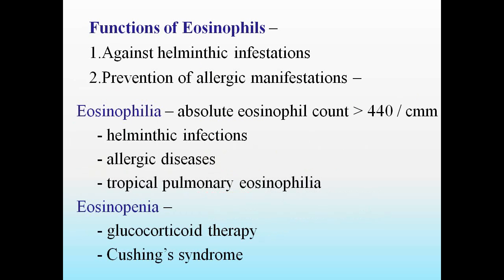The functions of eosinophils are: defense against helminthic infestations and prevention of allergic manifestations — these are the 2 basic functions. Eosinophilia means the absolute eosinophil count goes beyond 450 per cubic millimeter, seen in helminthic infestations, allergic diseases, tropical pulmonary eosinophilia, etc. Eosinopenia — decreased count — is seen in Cushing's syndrome and glucocorticoid therapy.